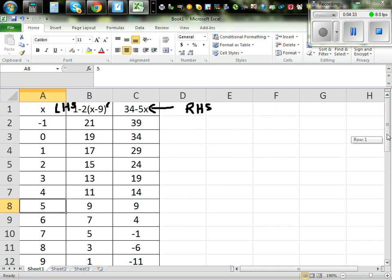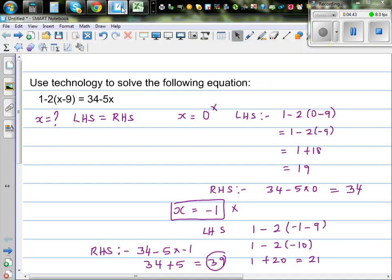So when X is 5, your left hand side is 9 and your right hand side is 9. So the solution, the answer for this equation is X is equal to 9. Just like that. This is how you can solve this equation using Excel.